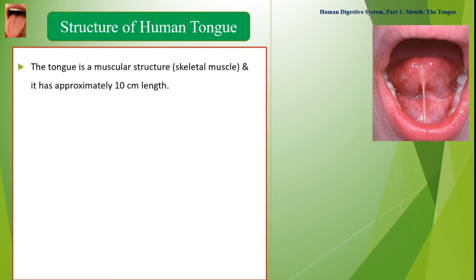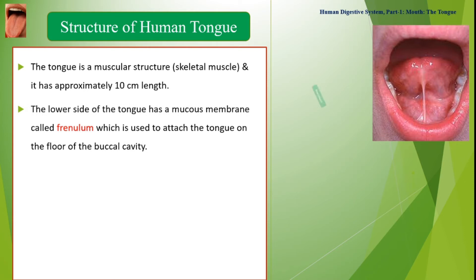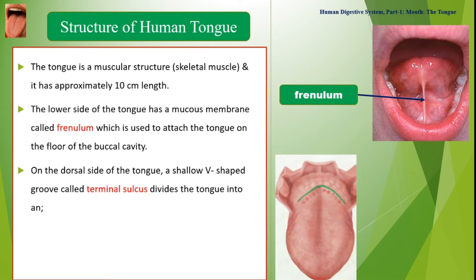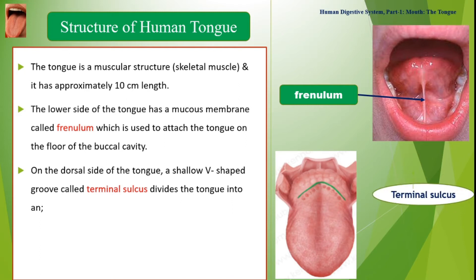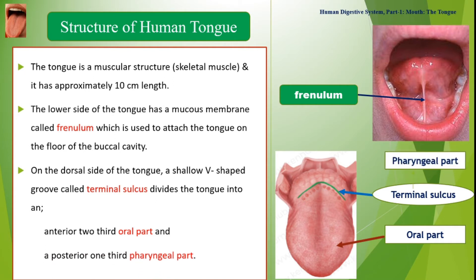The human tongue is a muscular structure made up of skeletal muscles, approximately 10 centimeters in length. The lower side of the tongue has a mucous membrane called the frenulum, which attaches the tongue to the floor of the buccal cavity. On the dorsal side, a shallow V-shaped groove called the terminal sulcus divides the tongue into an anterior two-thirds oral part and a posterior one-third pharyngeal part.